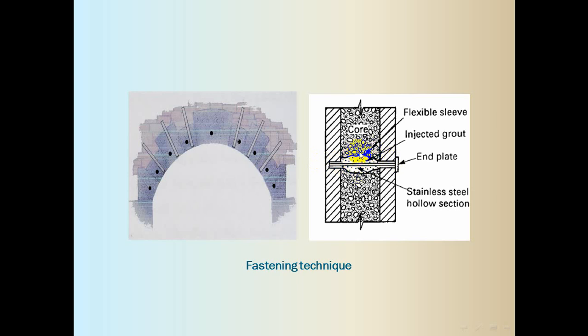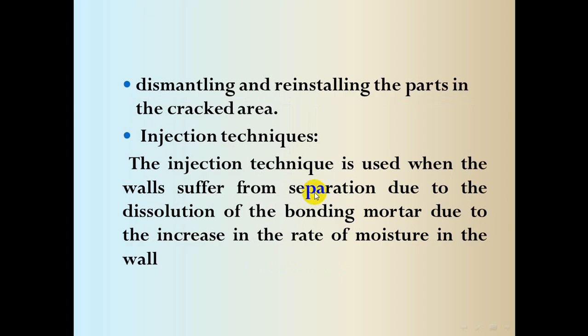The metal piece is fixed after insertion by injecting a specific material into the wall so it is secured between the wall elements. If this solution is not workable at all, disassembly and reassembly is performed on the section needing restoration. If there is a risk of part of the building collapsing, dismantling and reassembly (فك وإعادة تركيب) must be done.